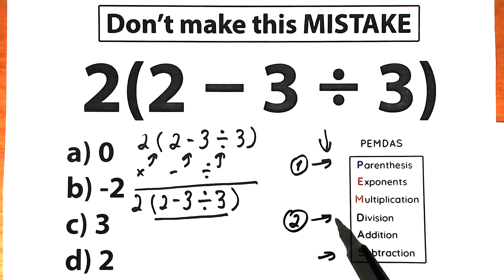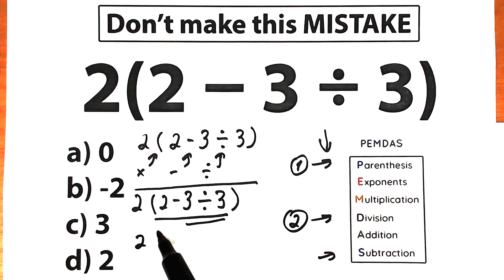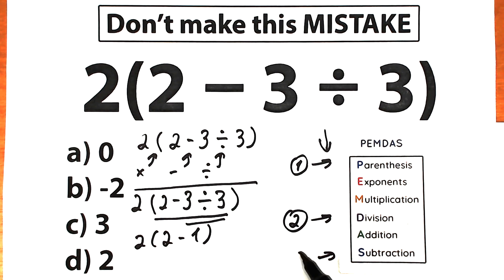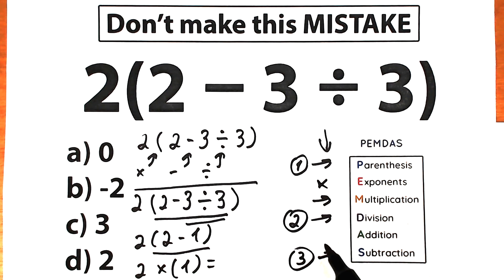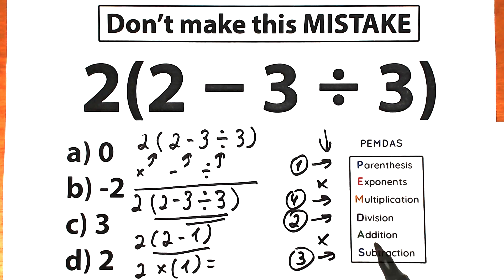Our second step is division: we divide 3 by 3, which gives us 1. Inside parentheses we now have 2 minus 1. Our third step is subtraction: 2 minus 1, which is equal to 1. Our last step is multiplication — we don't have any exponents or addition signs. 2 times 1, which is equal to 2.